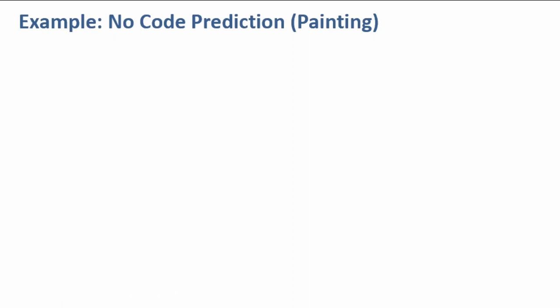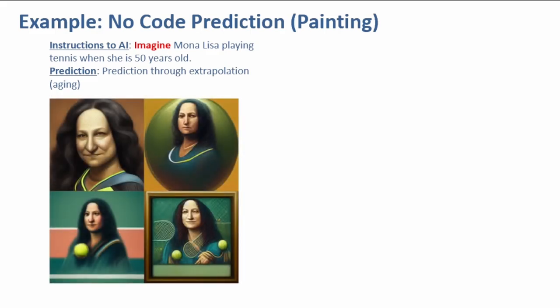These are examples of no-code prediction. We give AI instructions in human language and AI makes predictions. In this example, AI predicts aging through extrapolation on Mona Lisa playing tennis when she is 50 years old.